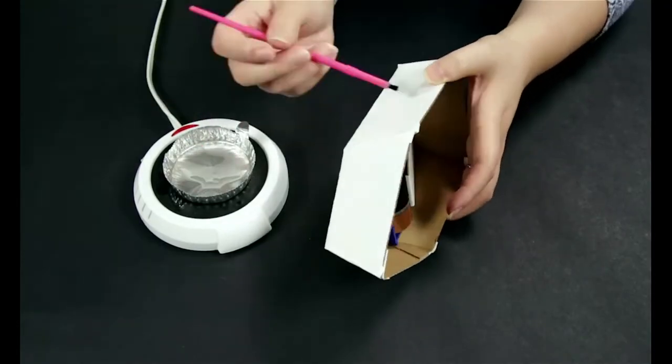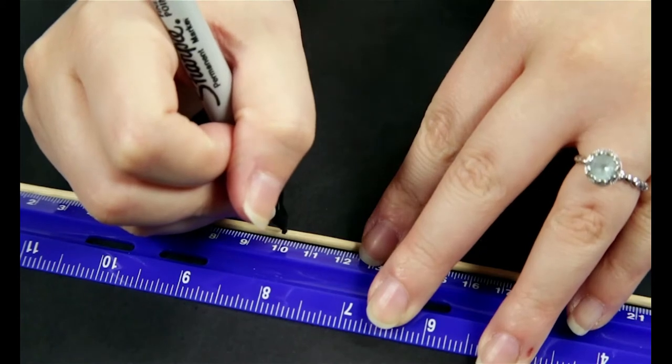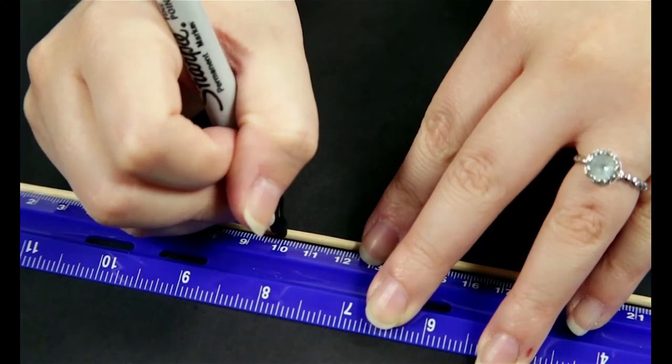Coat the bottom of the boat with paraffin using the paintbrush. Cut the skewer down to 10 cm.